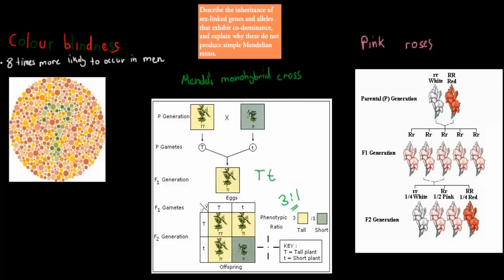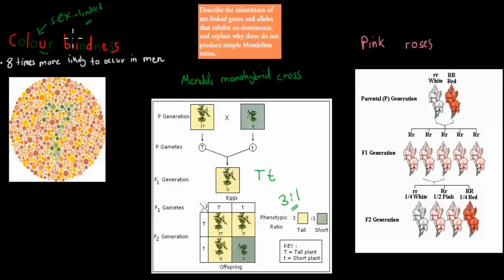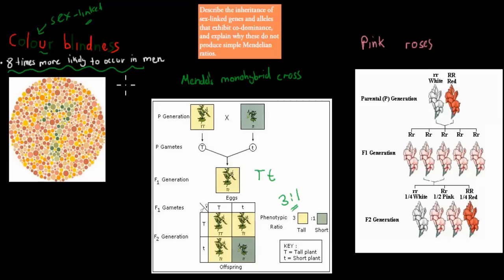But if we looked at something like sex-linked genes and co-dominants, we get a bit of a different ratio. For example, colorblindness is sex-linked, which means that certain sexes have it more often than others. Males have it more often than females — in this case, it's eight times more likely to occur in men. When looking at Mendel genetics, there's no distinguishing feature between men and females; they all have the same ratio. Whereas with colorblindness, men have it more common than females.